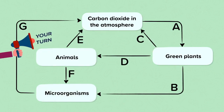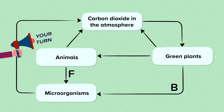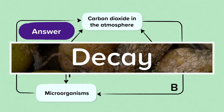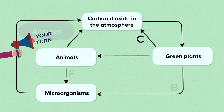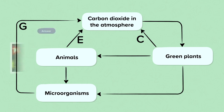Now your turn — pause the video and see if you can name the other processes: B, C, D, E, F, G. Here are the answers. B is going from green plants to microorganisms. This is actually the same answer as F, where the carbon moves from animals to microorganisms. This is decay — you can also say death and decay. C is going from green plants to the atmosphere; it is actually the same process as E and G. When carbon dioxide moves from a living thing to the atmosphere, this process is respiration.